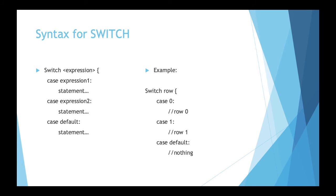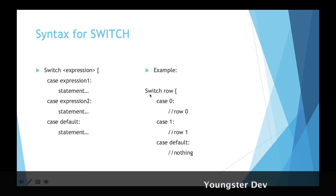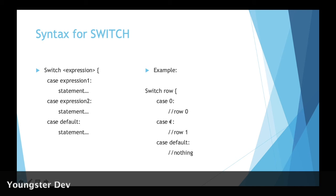For switch, the syntax is: 'switch' keyword followed by the expression, and within curly braces we have different cases with statements, and a default case at the end. For example: 'switch row { case 0: ... case 1: ... default: ... }' — when row equals 0 one thing happens, when row equals 1 another happens, and when none of the values match, the default case executes.